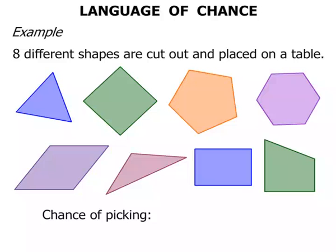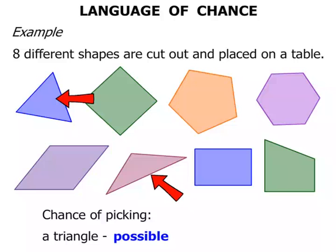What's the chance of picking, firstly, a triangle? Well, we can see that there's a triangle and we've got another triangle there. So it is possible to pick a triangle.